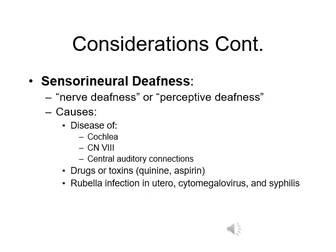The other type is sensorineural deafness, which is usually caused by disease of the central auditory pathway — for example, disease of the cochlea, disease of cranial nerve eight, or dysfunction of central auditory connections. It can be caused by side effects of drugs or toxins, or by infections acquired in utero.